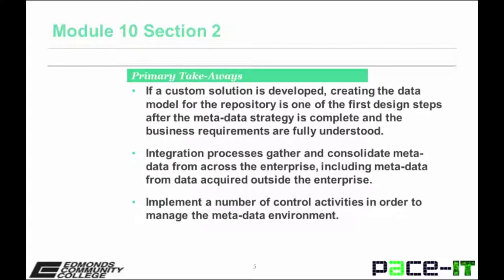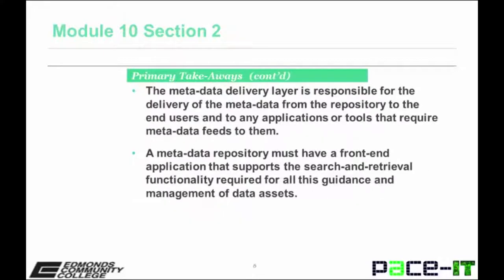Primary takeaways from this section include the following. If a custom solution is developed, creating the data model for the repository — which is called a meta model — is one of the first design steps after the metadata strategy is complete and the business requirements are fully understood. Integration processes gather and consolidate metadata from across the enterprise, including metadata from data acquired outside the enterprise. Implement a number of control activities in order to manage the metadata environment. The metadata layer is responsible for the delivery of metadata from the repository to the end users and to any applications or tools that require metadata feeds to them.